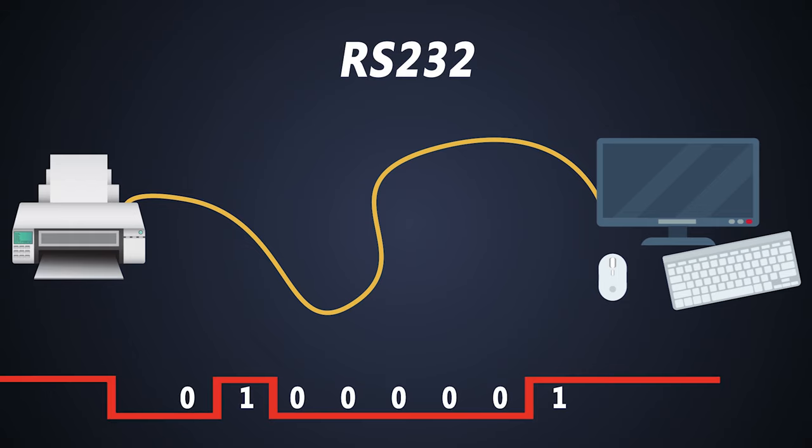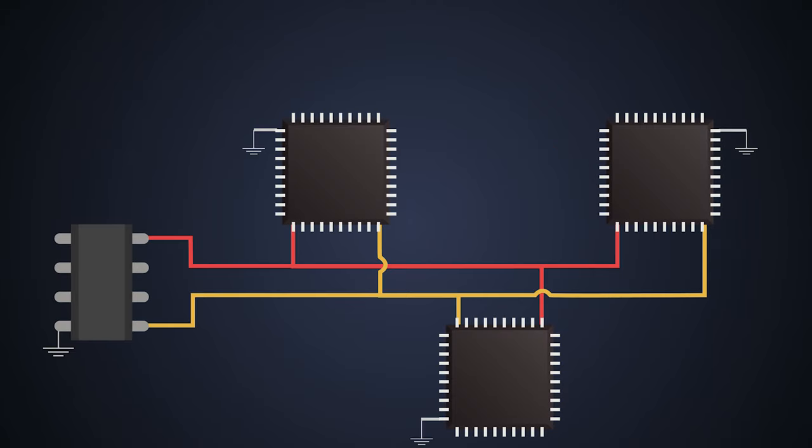The two wires which are connecting the devices are SDA, that is data line, and SCL, that is clock line.